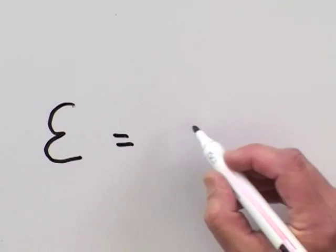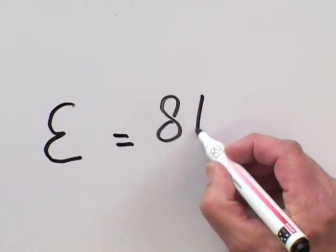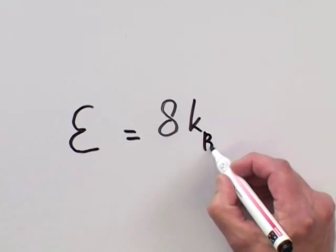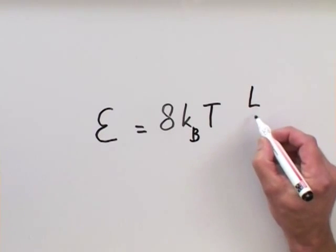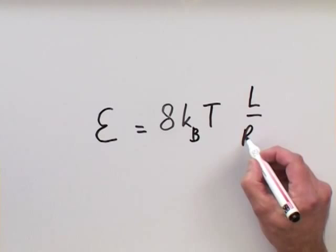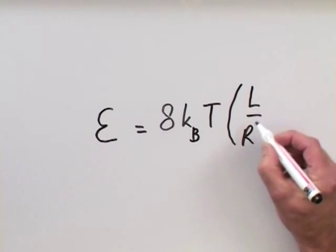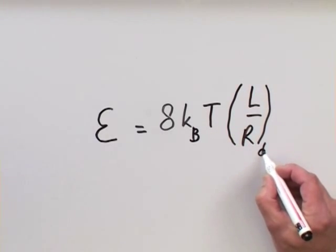Epsilon is a constant, about 8, k, the constant of Boltzmann, temperature, an inductance, and a resistor. These are device properties.